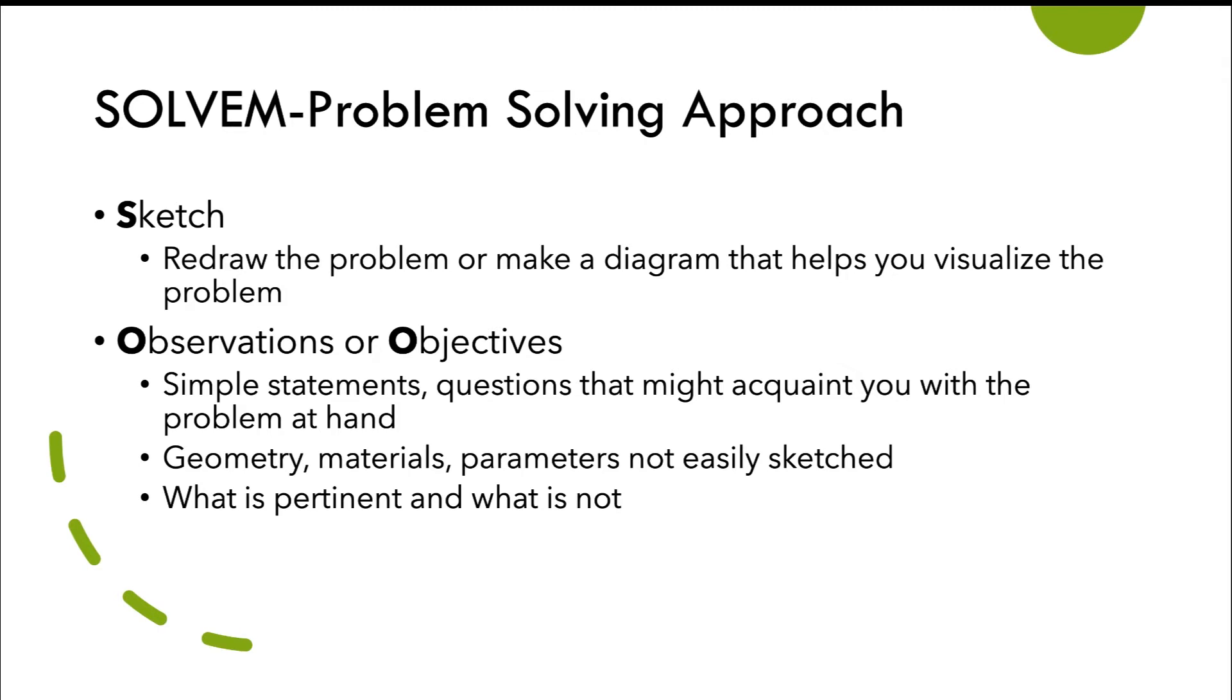The next part, observations or objectives, is where we write some simple statements or questions that might make you more familiar with the problem at hand. It may let you determine what good or bad assumptions are. It may let you know what it is you're looking for. Things like geometry, materials, parameters, things that are not easily sketched may be put into this section, and we might also decide what is pertinent and what is not pertinent to my problem solution.